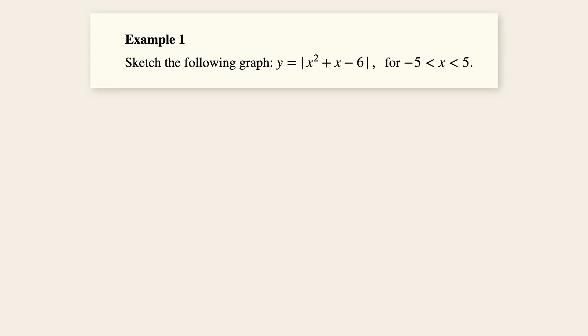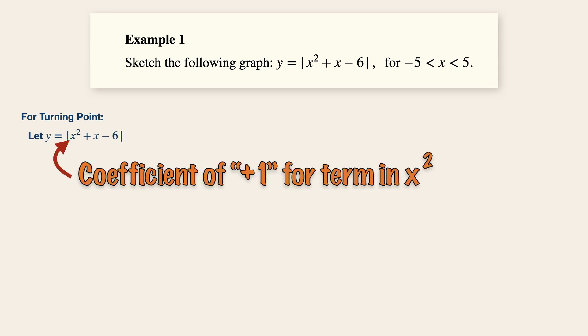Firstly, we will need to find the turning point of the quadratic curve by completing the square. Now, before you do that, make sure you have a coefficient of a positive 1 for the term in x squared, and then you are ready to begin.